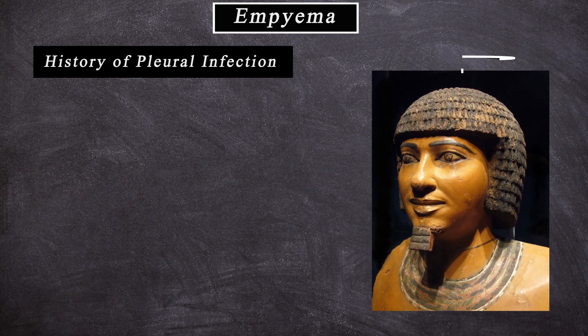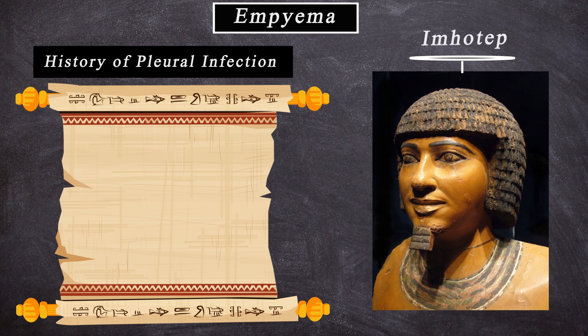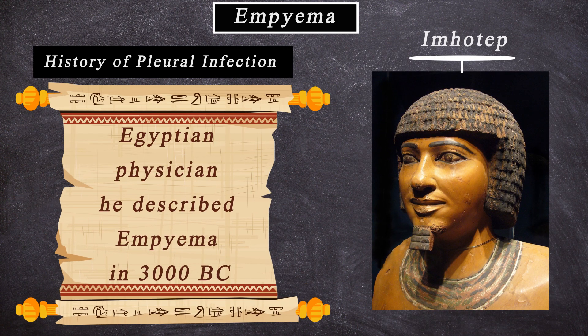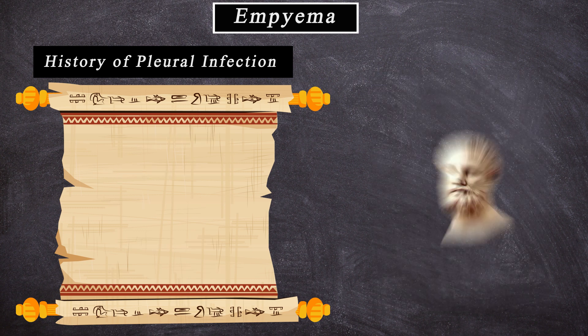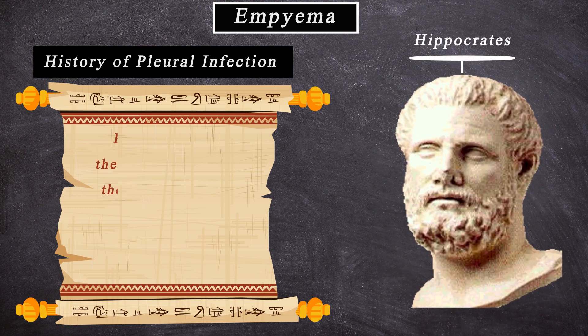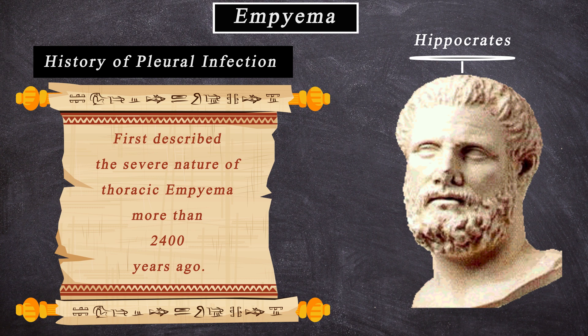Regarding the history of pleural infection, Imhotep is an Egyptian physician who described Empyema in 3000 BC. But Hippocrates first described the severe nature of thoracic Empyema more than 2400 years ago.